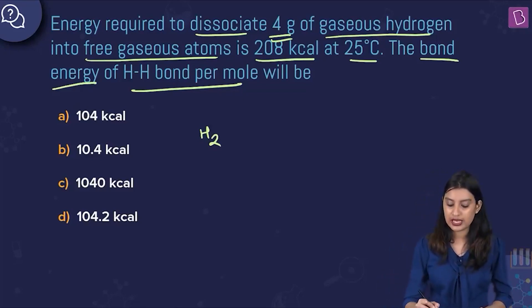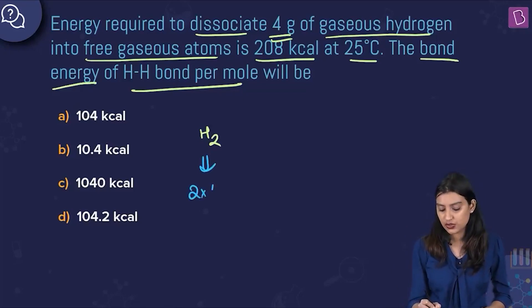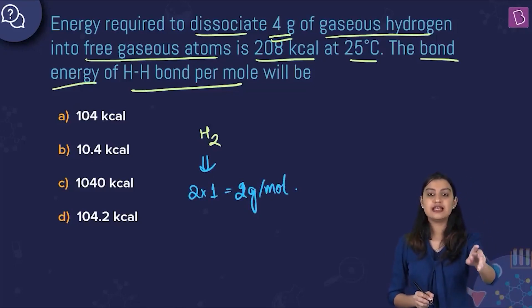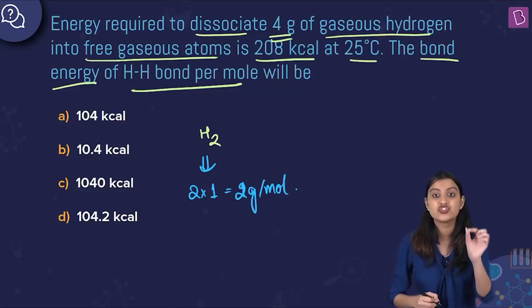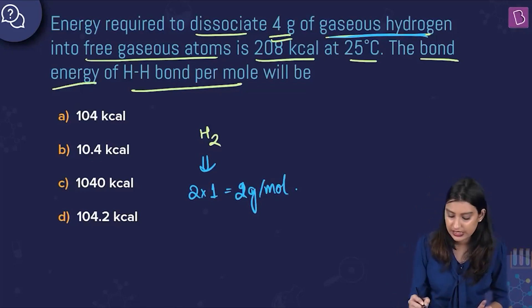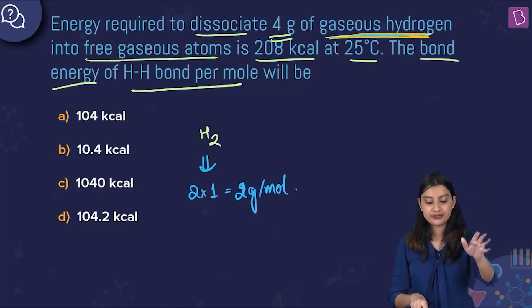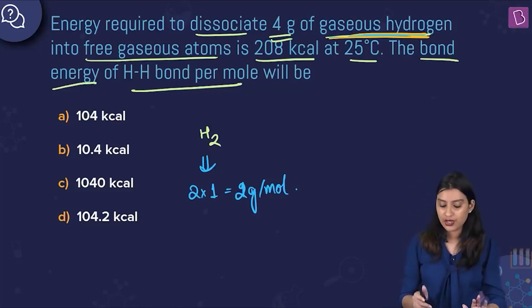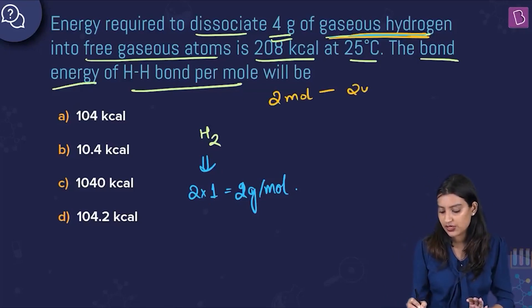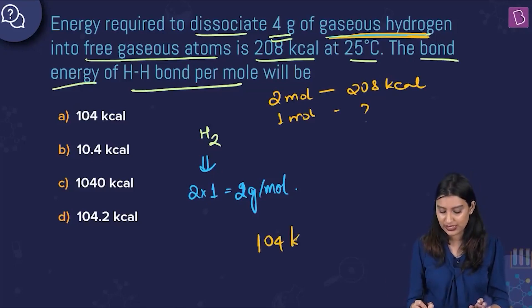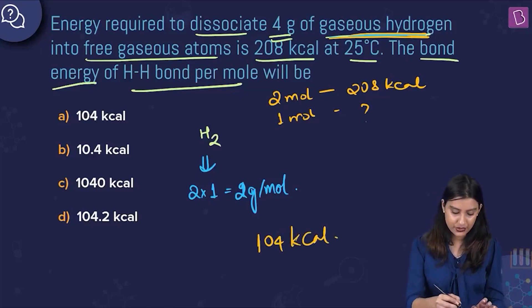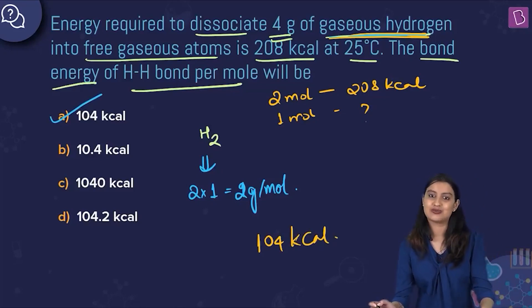The molar mass of H2 is 2 × 1 = 2 grams per mole, which means in 4 grams we have 2 moles of molecular hydrogen. We need the bond energy per mole, so by simple unitary method: for 2 moles it was 208 kilocalories, so for 1 mole it is 208 ÷ 2 = 104 kilocalories. The answer is option A, 104 kilocalories.